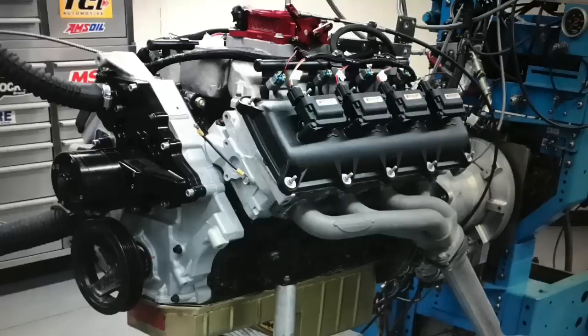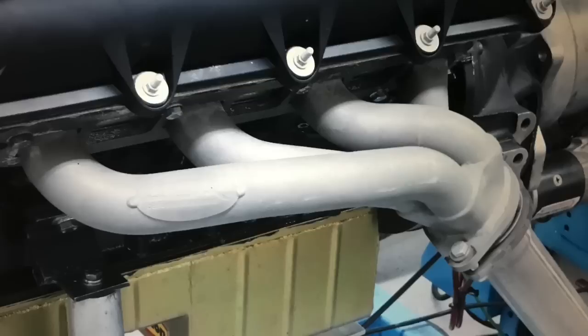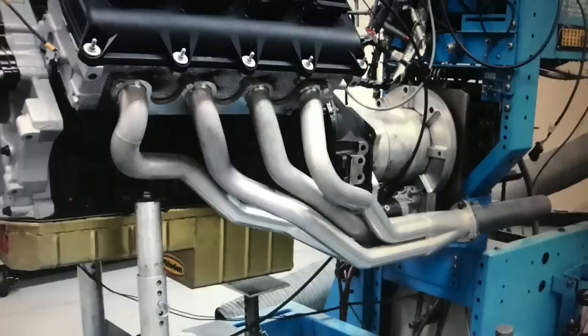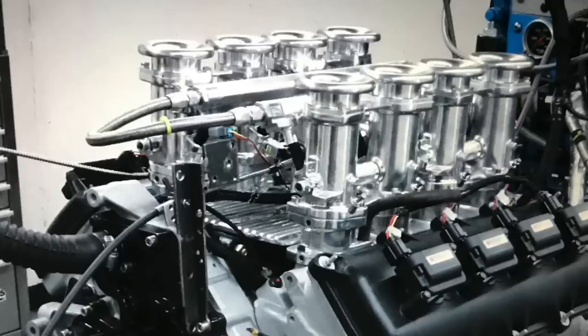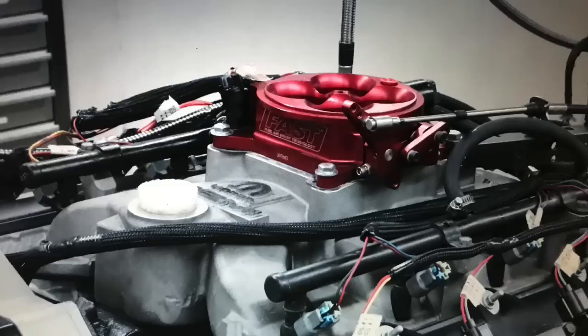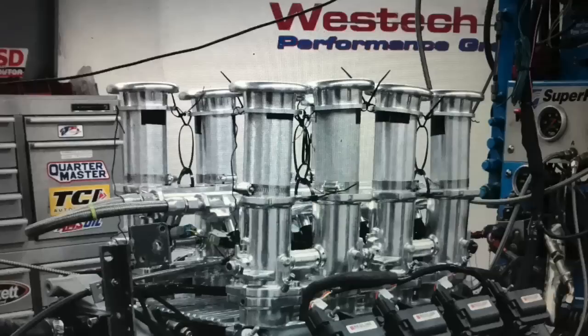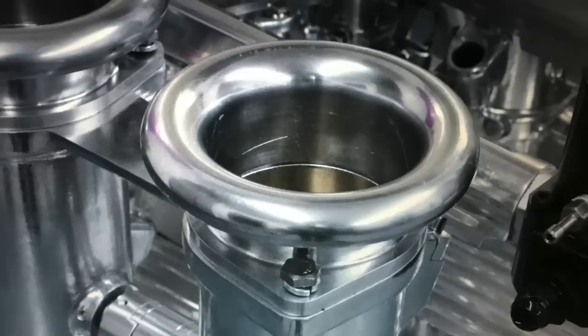Some of my favorite dyno tests come from what I call what-if moments. So I'm testing a 5.7 liter Gen 3 Hemi. We compare shorty headers versus long tube headers, then I compare a Speedmaster stack injection versus a single plane intake from Mopar performance. Now what if I take aluminum tubing, slide it inside the stack injection and check the effect of runner length. Does it work? Let's find out.